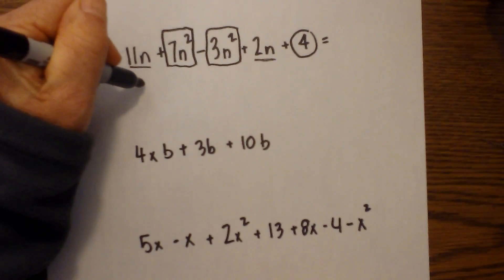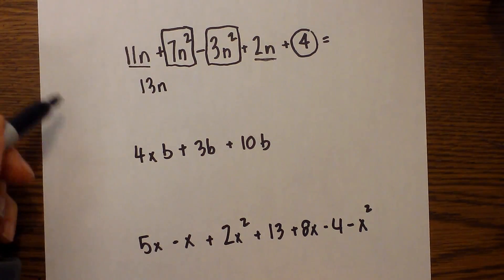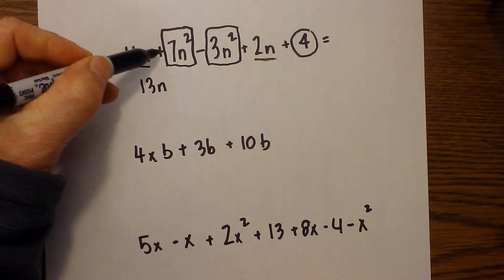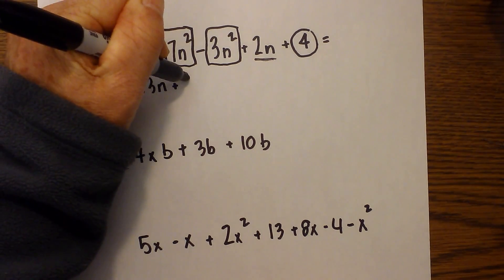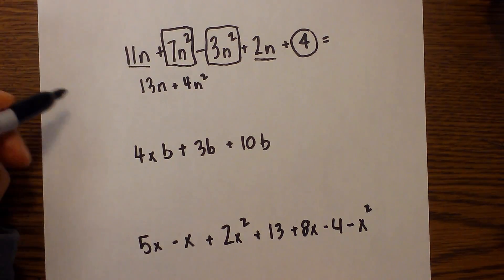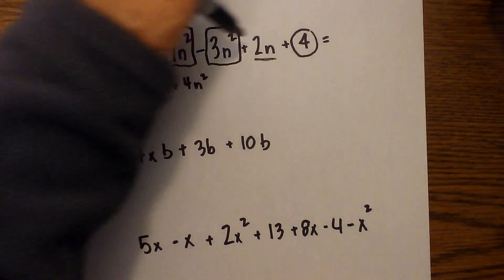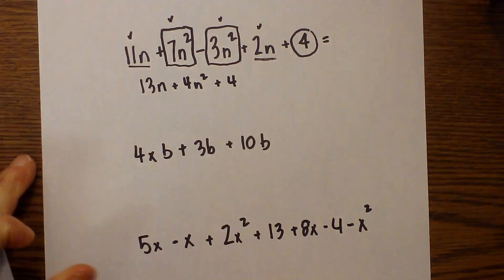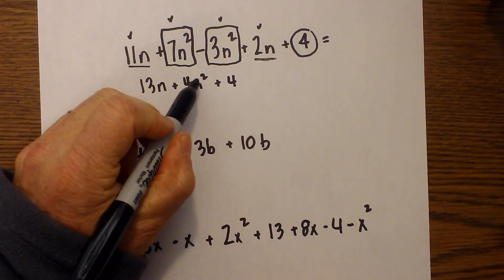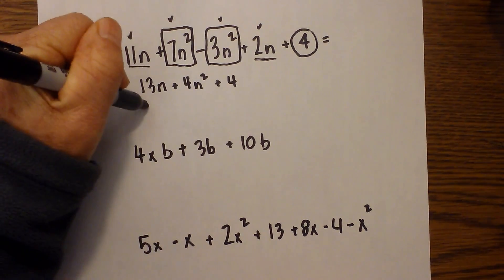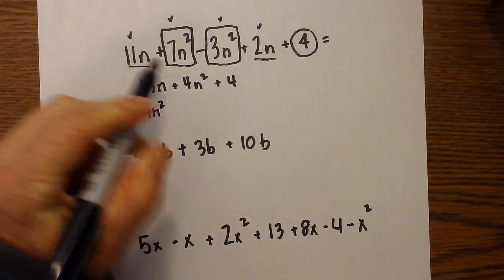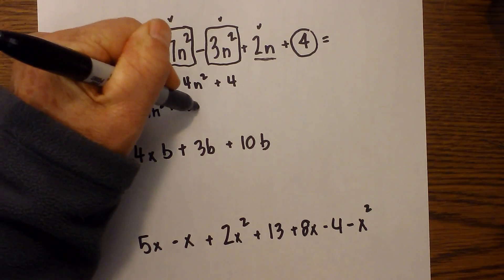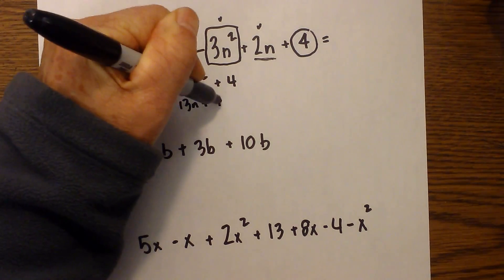So, we have 11n plus 2n that is 13n and then we have 7n squared minus 3n squared. So, that becomes a positive 4n squared. And I'll put a check by what we've used so far. So now, all we have left is a positive 4. And then, I would rewrite this. Remember the rule with the exponent. I would write it 4n squared plus 13n plus 4.